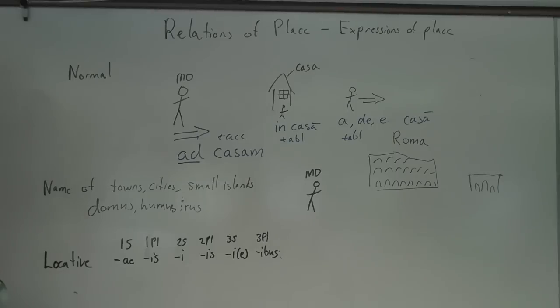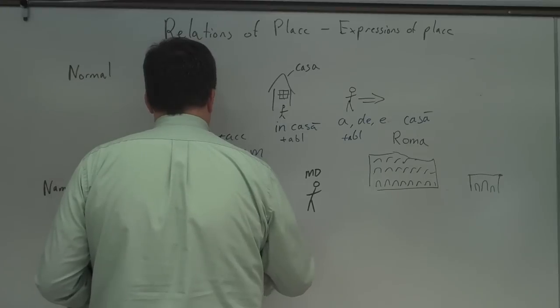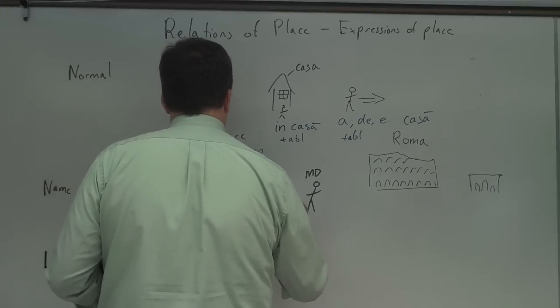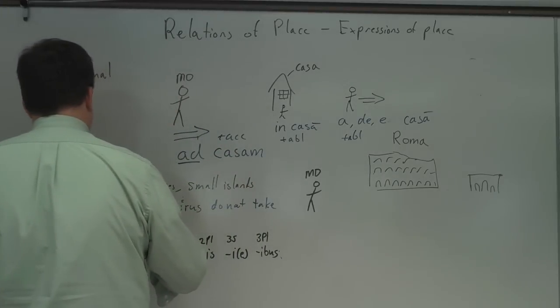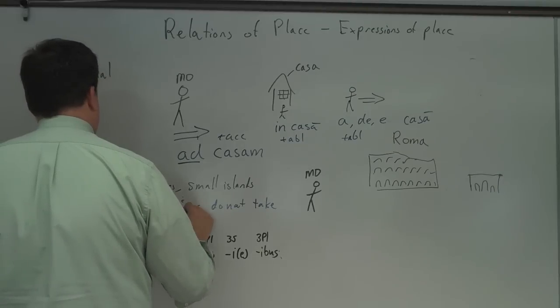When you say, for example, I'm going home tonight, you don't say I'm going to home. You say I'm going home. Latin does this with town, city, small islands. These guys, you want to put down name of town, city, small islands, domus, humus, rus, do not take prepositions normally.